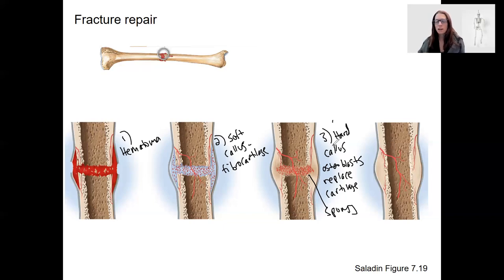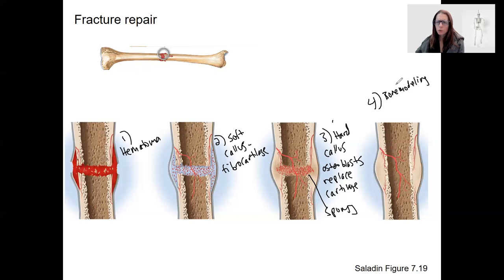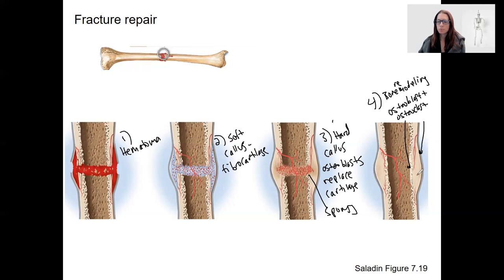At this point, with the hard callus of spongy bone, the fracture is usually healed enough to withstand normal muscle contraction forces. But it's not actually done yet. What happens last is bone remodeling — osteoblast and osteoclast activity converts that spongy bone into compact bone, which is stronger. Osteoblast activity is the primary driver of this remodeling.